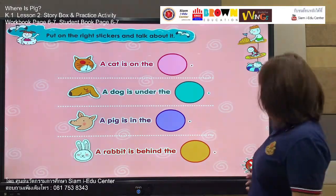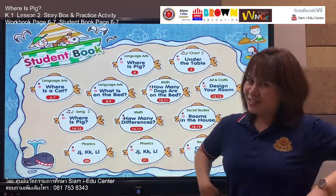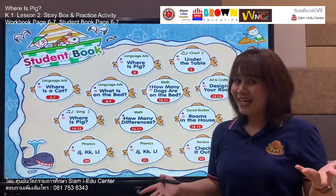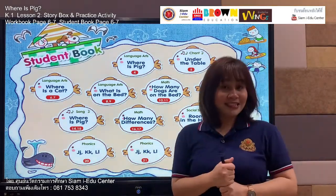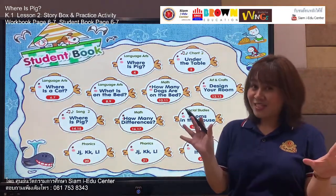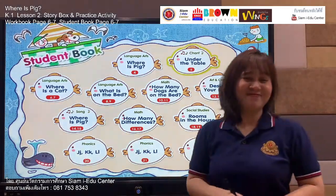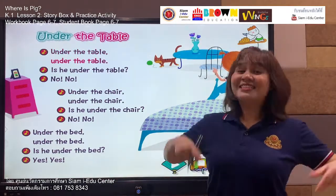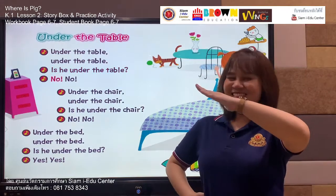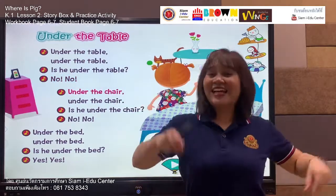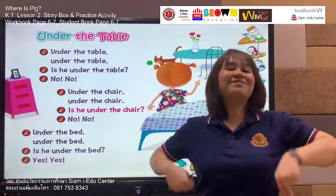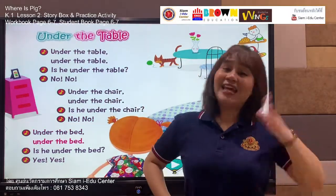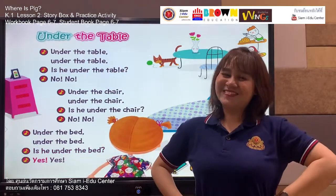All right! This part we are going to practice more with our song. Can you remember how to sing and dance? Yes! Let's practice singing first. This song we call Under the Table. Are you ready to sing? Let's sing louder, everyone! Under the table, under the table — is he under the table? No, no, no. Under the chair, under the chair — is he under the chair? No, no, no. Under the bed, under the bed — is he under the bed? Yes! Well done, everyone — you are good singers!